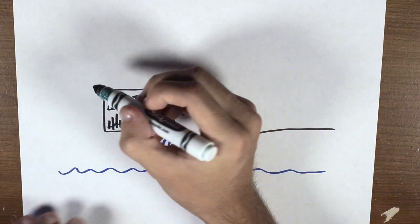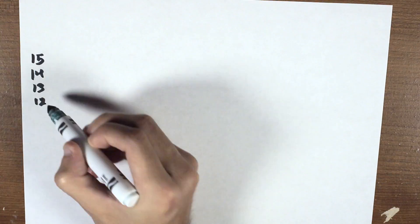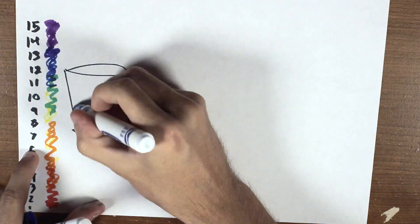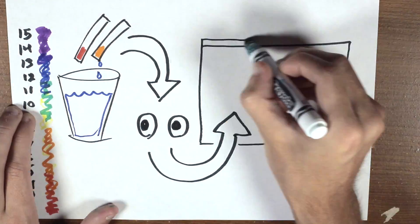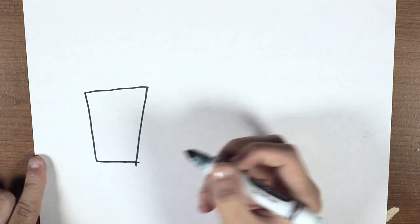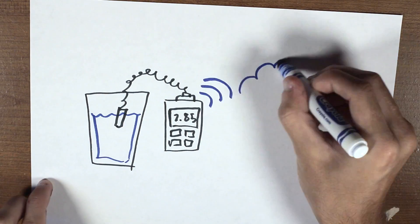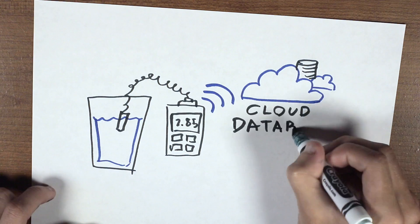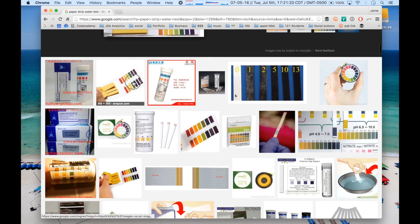First, we have to get sensors to as many people as possible. Paper strip tests are cheap and easy to find, but would require people to manually input the results from their tests. Digital sensors, however, would allow people to take a quick water sample and immediately upload the information to the site without having to interpret the results themselves.